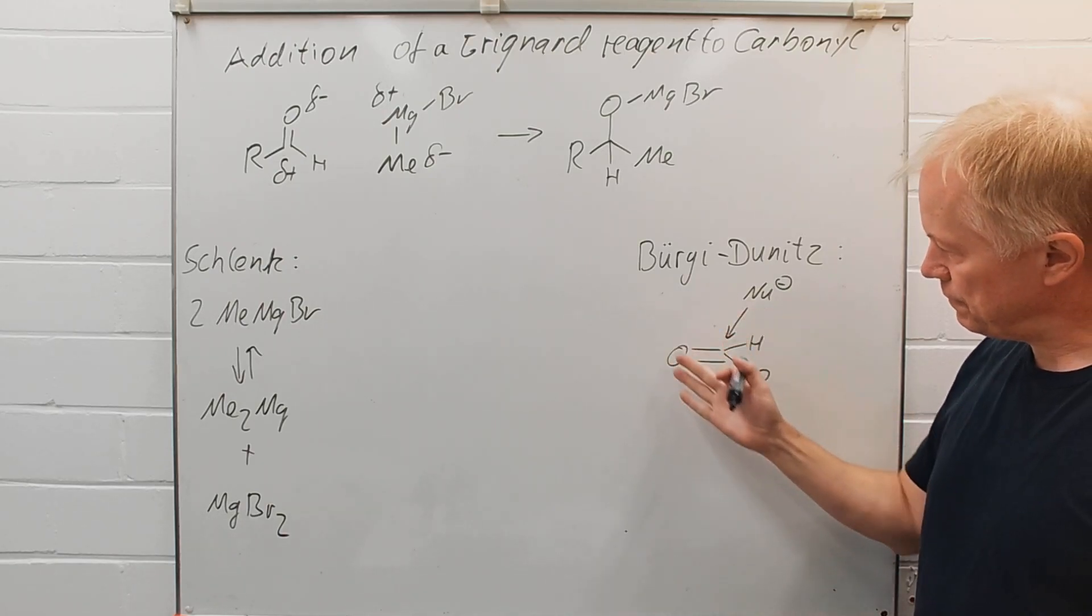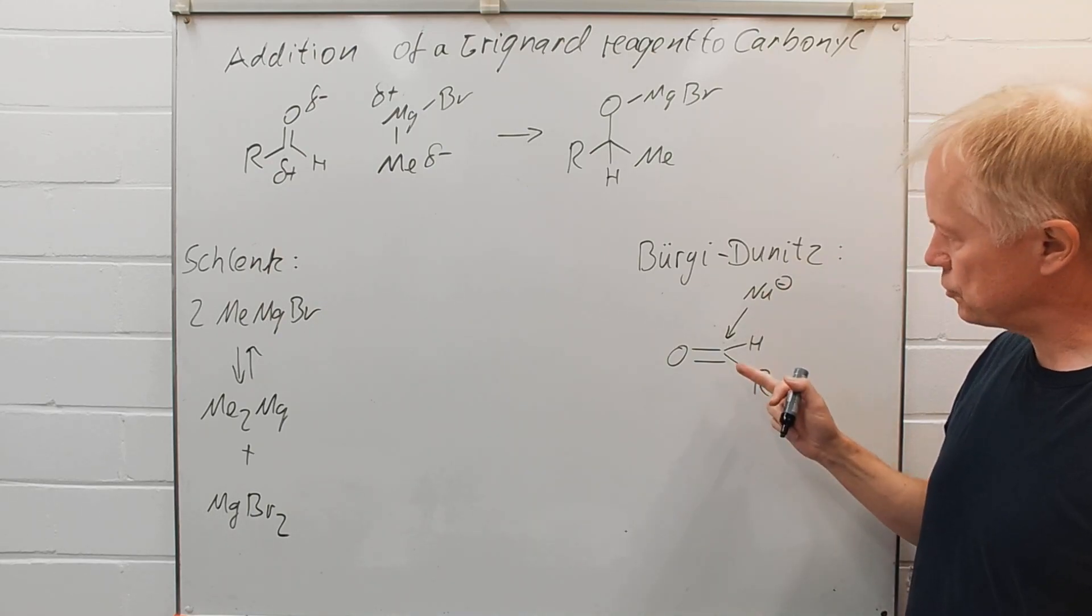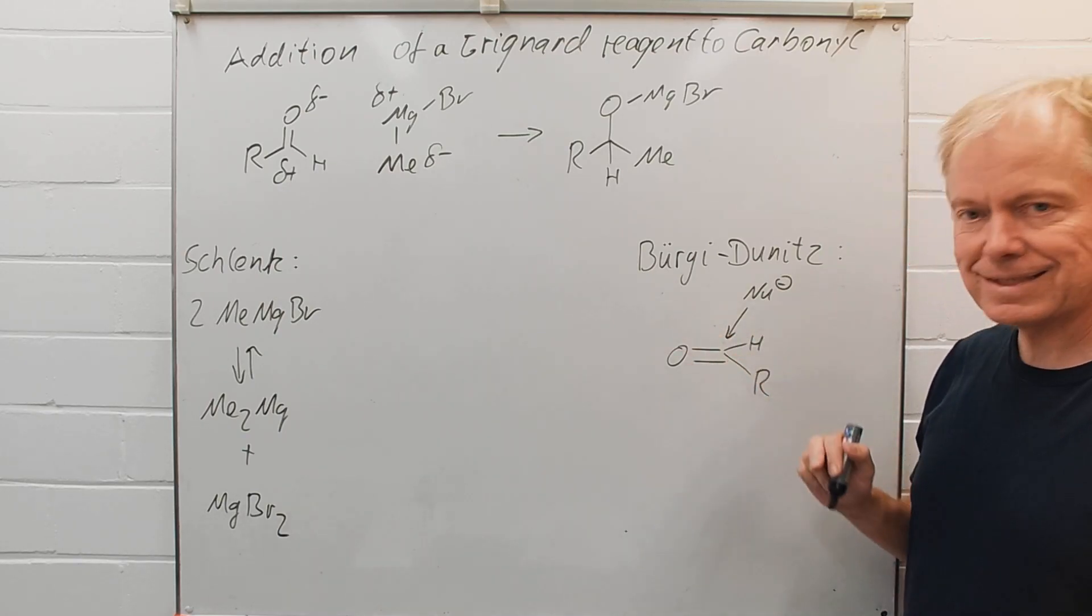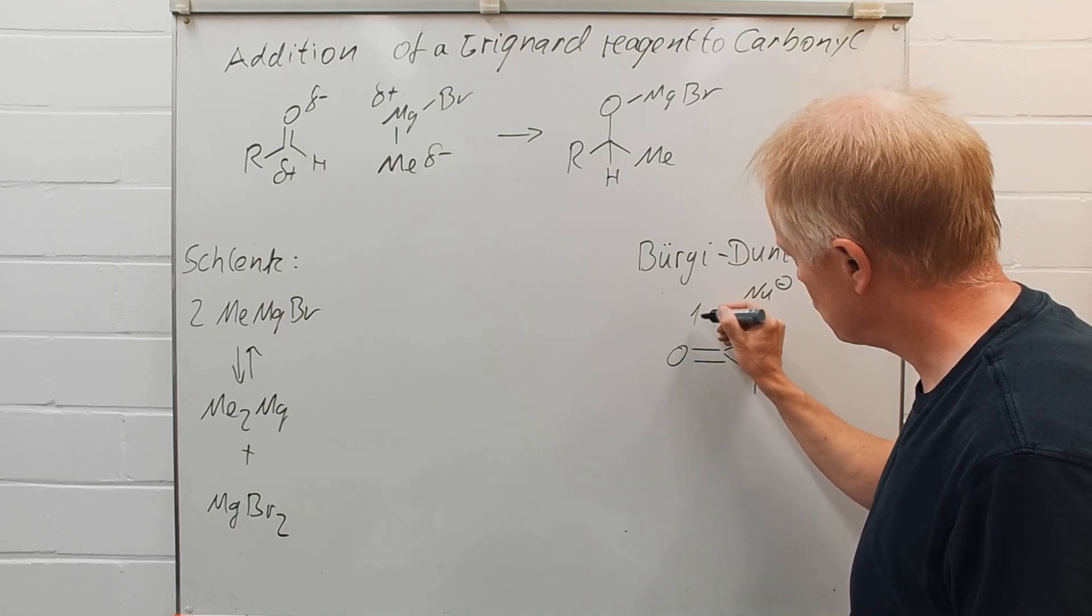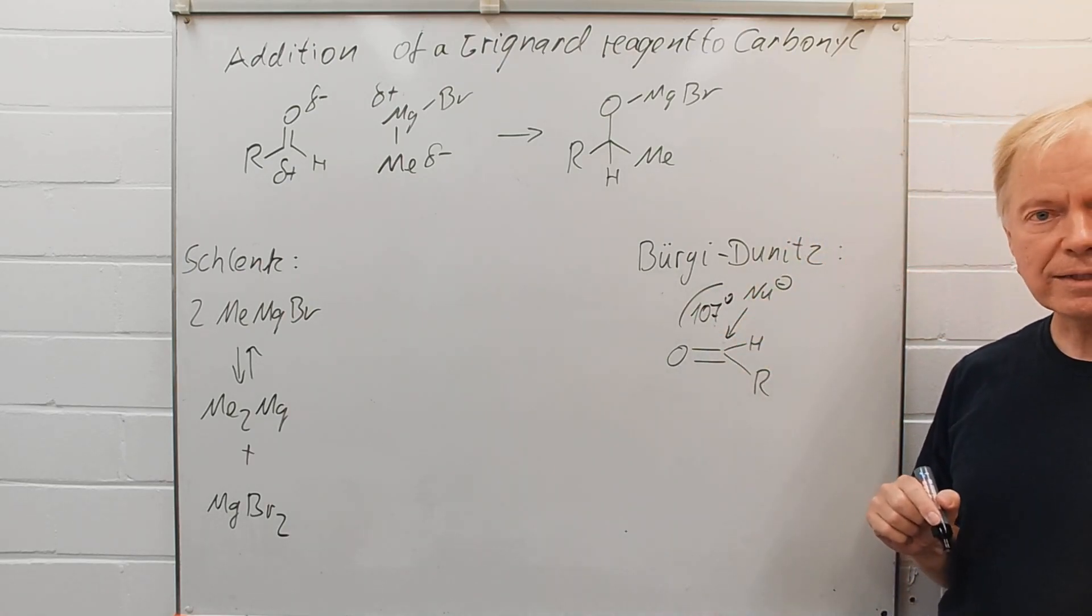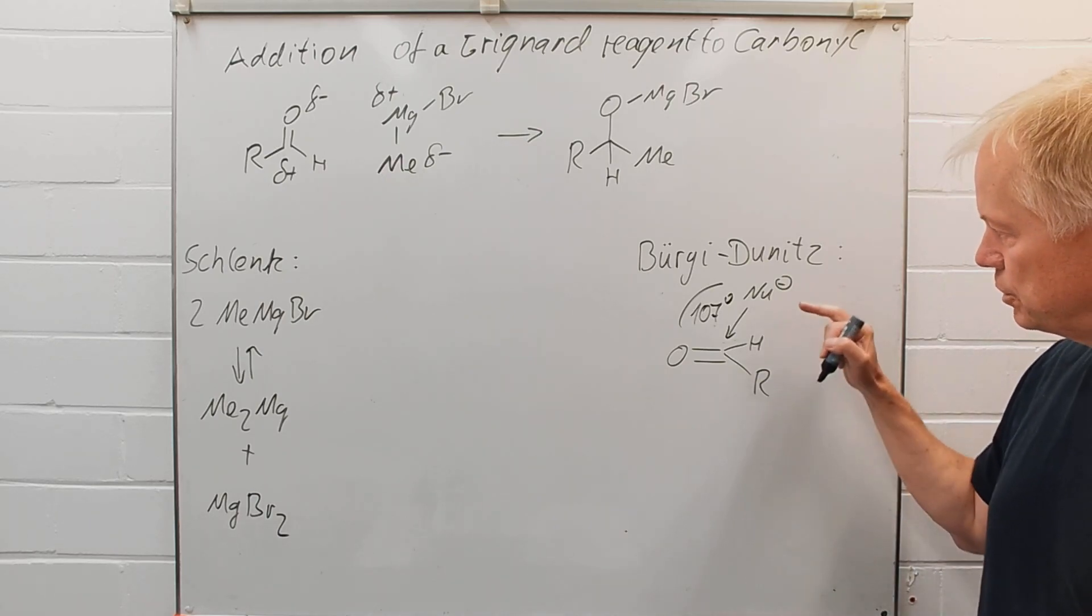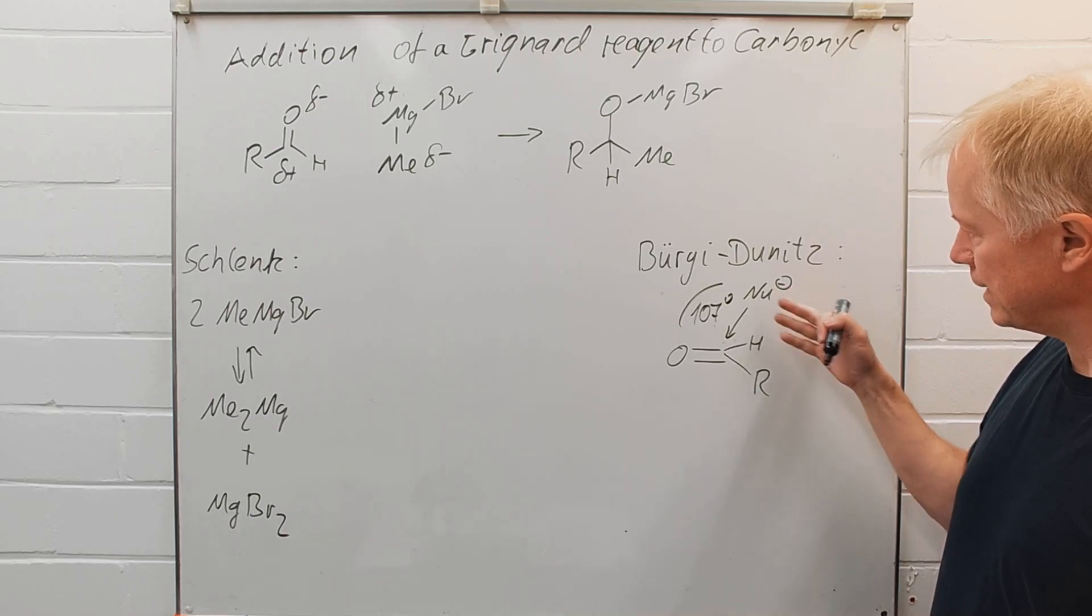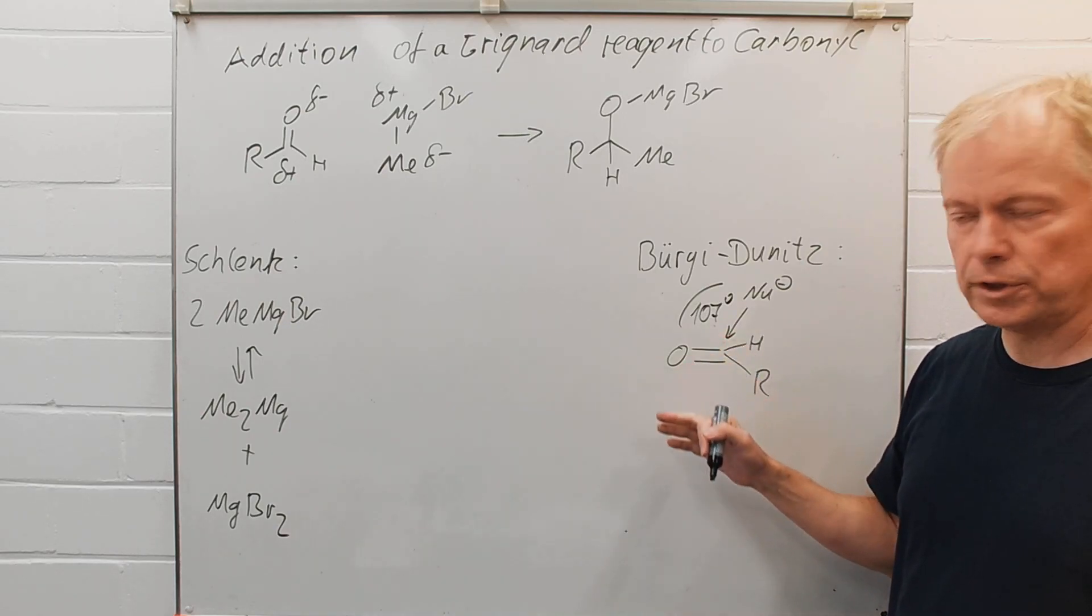If we have a carbonyl group, the trajectory of the nucleophile attacking that carbonyl group is known to have an angle of about 107 degrees.